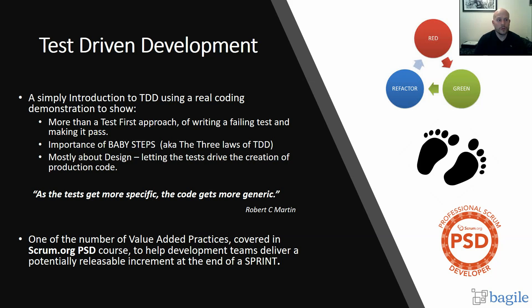Welcome. We're going to do a simple introduction to TDD using a real coding demonstration to show firstly that TDD is more than a test-first approach — that is, writing a failing test and making it pass. We'll cover the importance of baby steps, aka the three laws of TDD: don't write production code unless it is to make a failing unit test pass; don't write any more of a unit test than is sufficient to fail; and don't write any more production code than is sufficient to pass one failing unit test. It's mostly about design, and we're going to let the tests drive the actual production code itself. As you should see, as the test gets more specific, the code gets more generic.